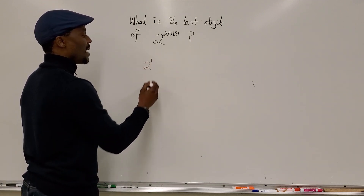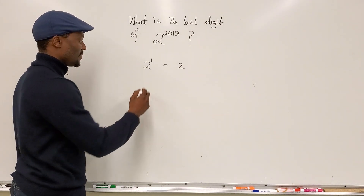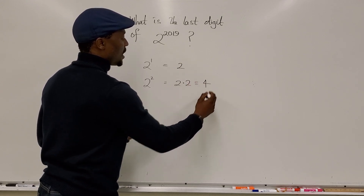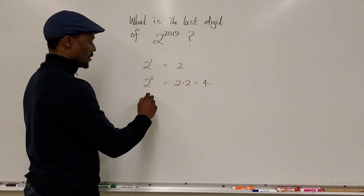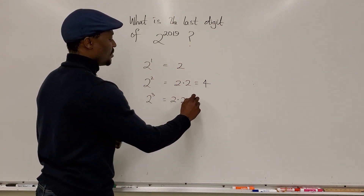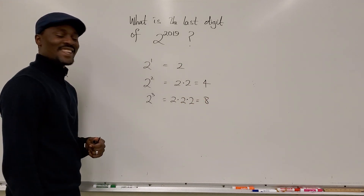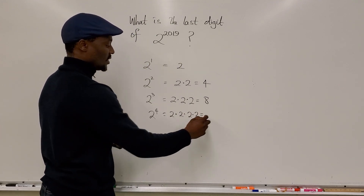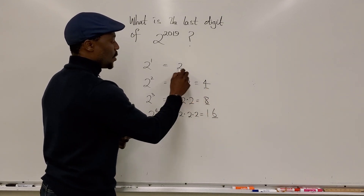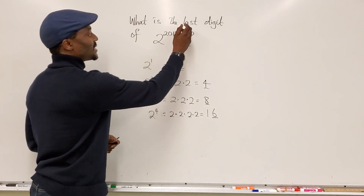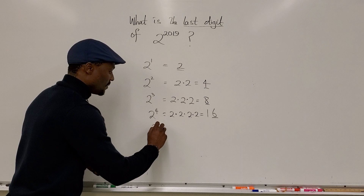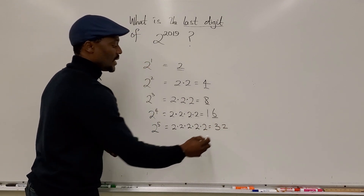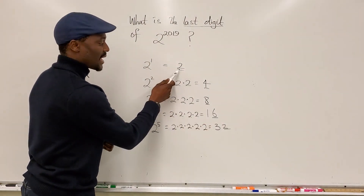2 to the first power is 2. 2 to the second power is 2 times 2, which gives us 4 — the last digit is 4. 2 to the third power is 2 times 2 times 2, which gives us 8 — the last digit is 8. 2 to the fourth power is 2 times 2 times 2 times 2, which gives us 16 — the last digit is 6. 2 to the fifth power gives us 32, and the last digit is 2. It looks like we've gone back to 2.